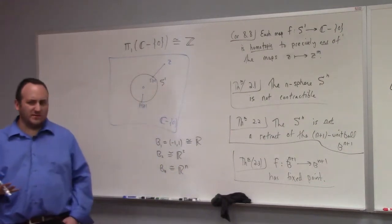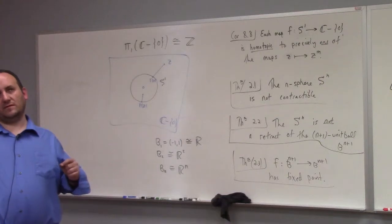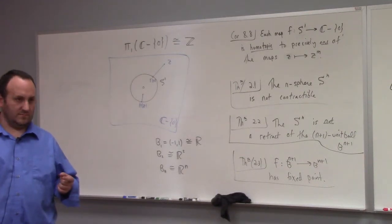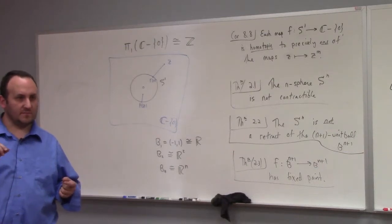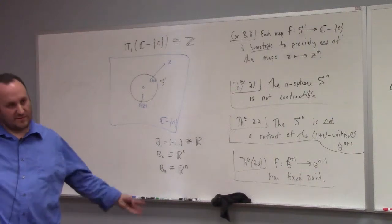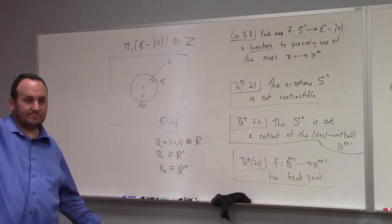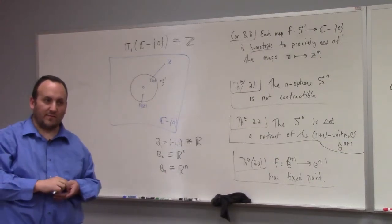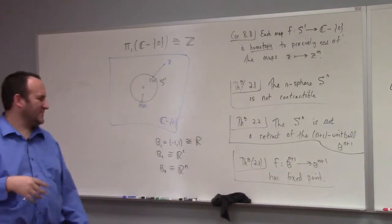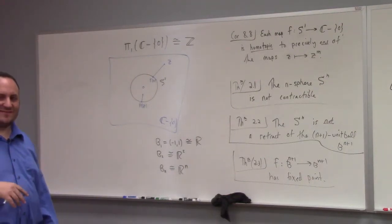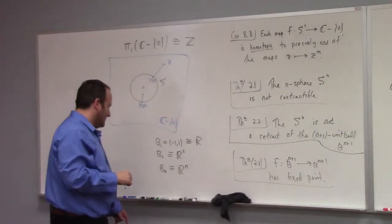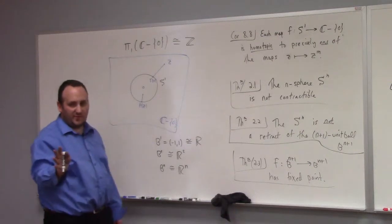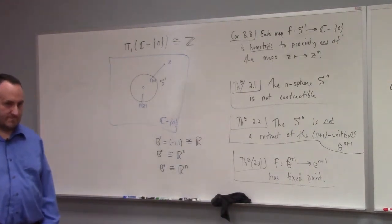To sketch that: take any point in ℝ^N, maintain the direction from the origin and shrink the length until it fits in the ball. That's a continuous, invertible — hence bijective — map between all of ℝ^N and B^N. So B^N and ℝ^N are homeomorphic.